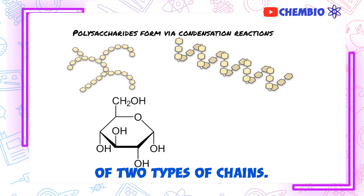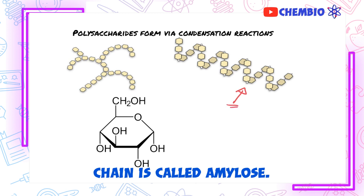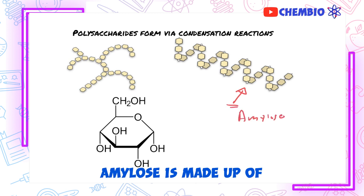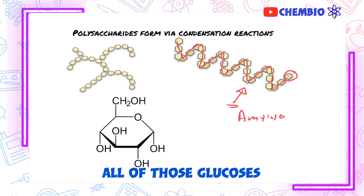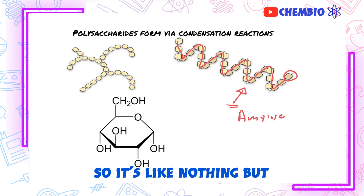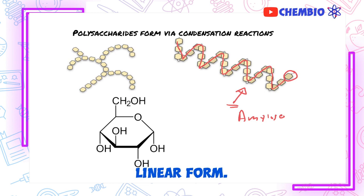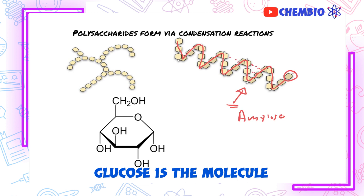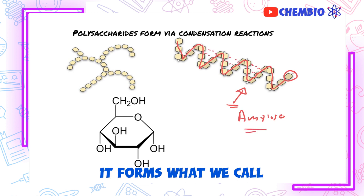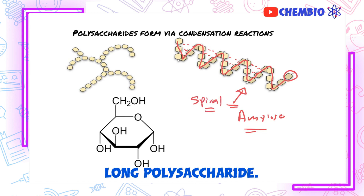Starch itself is made up of two types. One type of chain is called amylose. Amylose is made up of glucose molecules all attached. As you can see, it has a spiral shape. All of those glucoses are attached to each other in the same way — nothing but glucose attached in a linear form. But due to the presence of hydrogen bonds between the OH and H of adjacent glucoses, the molecule of amylose forms a spiral-shaped long polysaccharide.